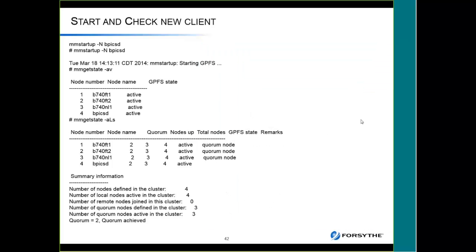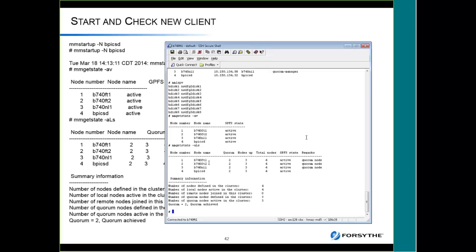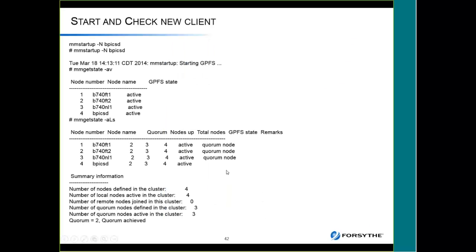You can also do mmgetstate -alf, which gives you more information: how many nodes are needed for quorum (two), how many quorum nodes are up (three), and total nodes connected (four). It also confirms quorum was achieved. The most useful commands you'll use are MMLSConfig, MMLScluster, mmgetstate -av, and mmgetstate -alf. Now we're going to add a file system — keeping it simple with default block size but using replication because we have failure group 2 and failure group 3.